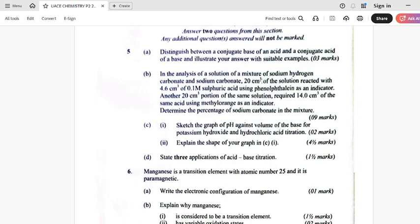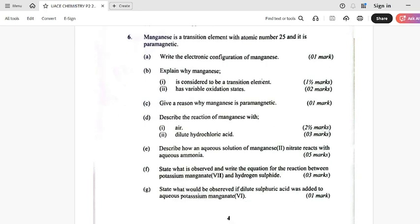So that's number five. Hope you can see what number five is talking about. Very, very clear. Let's go to number six. Hope you can see manganese is a transition element with atomic number 25. It is in its paramagnetic state. So hope you can see what UNEB brought on our tables as far as this paper is concerned.